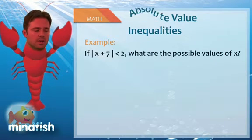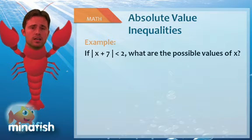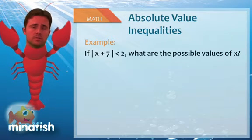So in this example below, we have the absolute value of x plus 7 is less than 2. So in order to understand how to solve this question, we have to solve two equations.